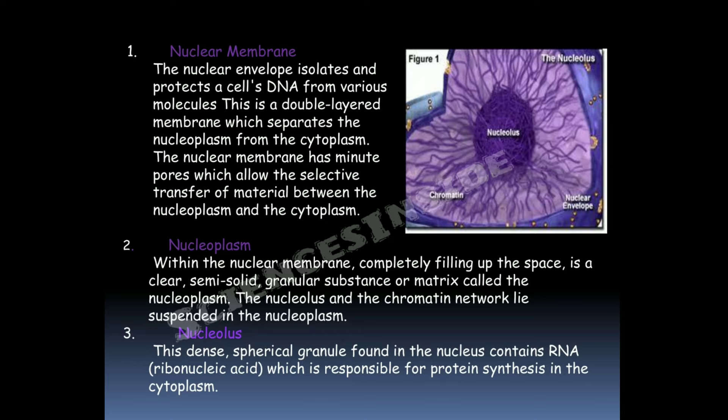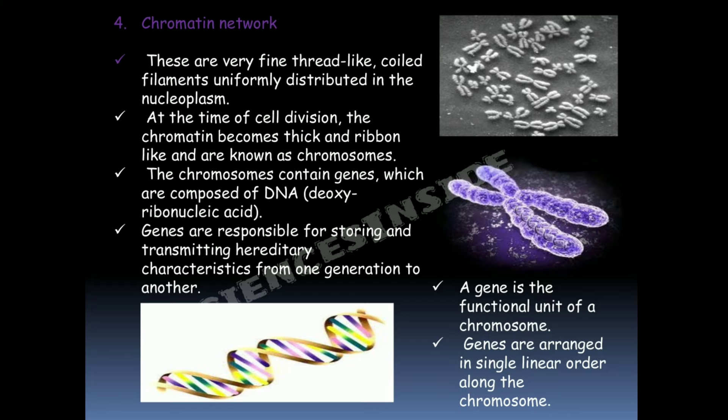Within the nuclear membrane, completely filling up the space, is a clear semi-solid granular substance — also called a matrix — known as nucleoplasm. The nucleolus and chromatin network lie suspended in this nucleoplasm. The nucleolus is a dense spherical granule found in the nucleus which contains RNA (ribonucleic acid) and is responsible for protein synthesis in the cytoplasm.